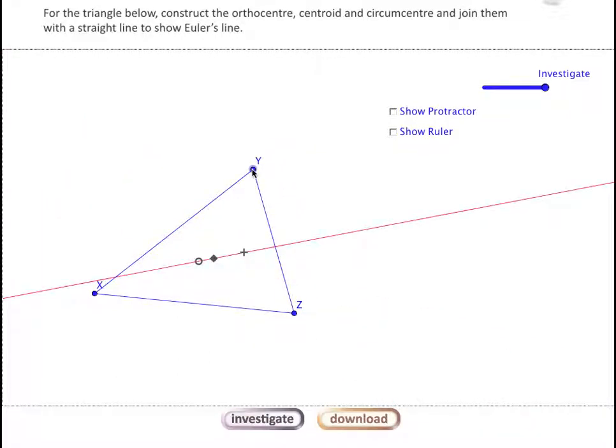Another point that's addressed in the investigation is the relative distance between these points. You can notice that the cross, or the orthocenter, is always further away from the diamond, the centroid, than the circle is.